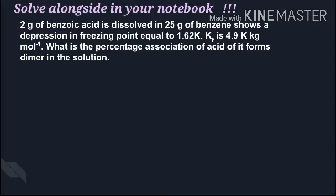This is a Van't Hoff factor based question. Suppose you add 2 molecules and after going inside they form one dimer molecule - one giant molecule. That is known as association. We need to find the percentage association by multiplying by 100.